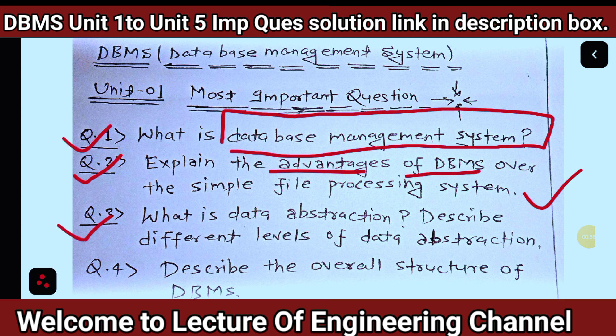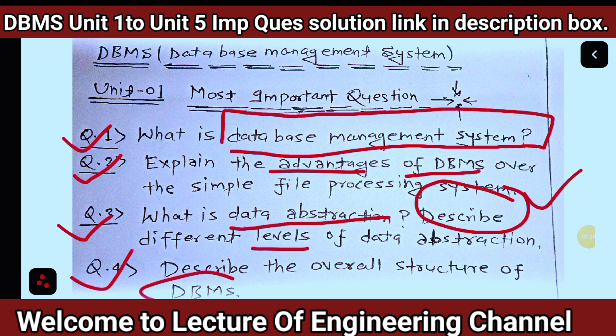Question number tisra, data abstraction kya hota hai? Or iska kitne sara yahan pe level hote hai? Usko yahan pe describe karna hai. Question number chautha ki bahut hi important hai, ki DBMS ka jitna sara yahan pe structure hai, usko yahan pe aapko describe karna hai.